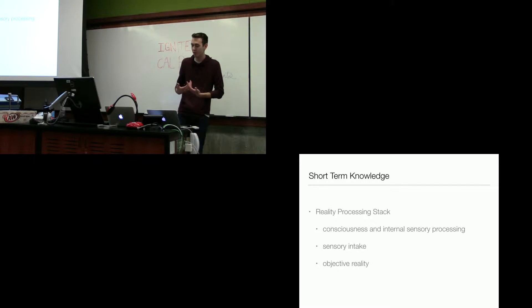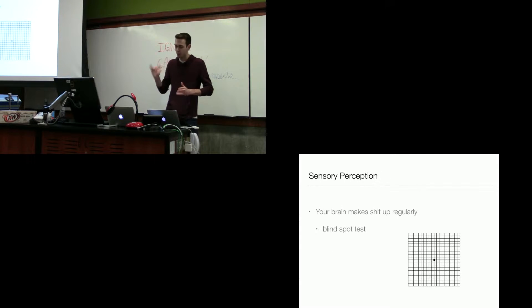So let's start with how we perceive things. Most people are generally aware that we don't directly experience physical reality. We kind of have consciousness and our sensory perception and then physical reality. And there's some issues in that sensory perception layer. A lot of people have taken this blind spot test where if you get your head at just the right place, the black dot will disappear and be replaced by grid lines because your brain is projecting what it expects to see when it can't form the actual image because of your optic nerve.